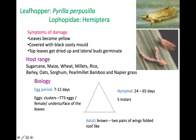The symptoms: leaves become yellow, covered with black sooty mold, top leaves get dried up, and lateral buds germinate. The host range includes sugarcane, maize, wheat, millet, rice, barley, oats, sorghum, pearl millet, bamboo, and napier grasses. You should know the host range, as in ARS exams they sometimes ask to write five hosts of Pyrilla perpusilla.